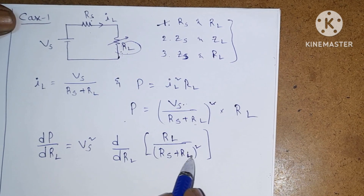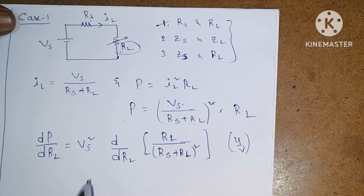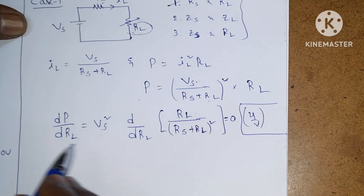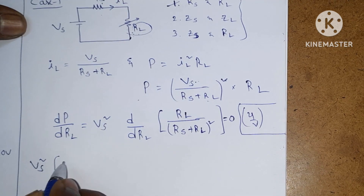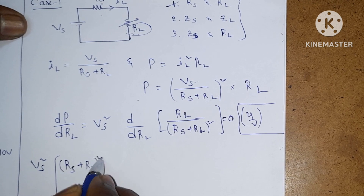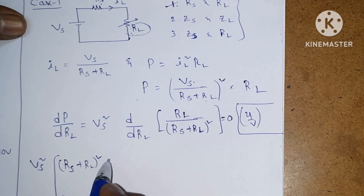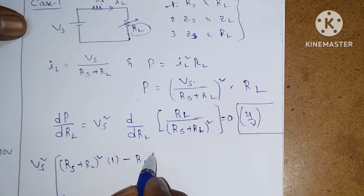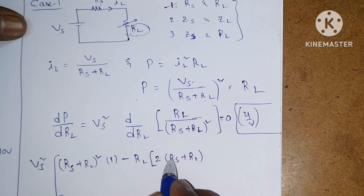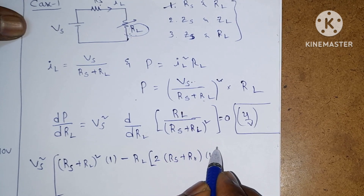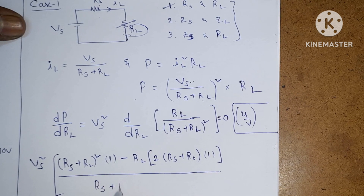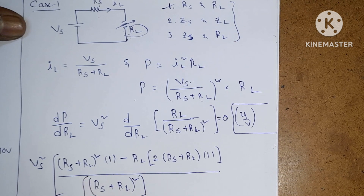Since both numerator and denominator are functions of the variable, we apply the U/V rule. Applying the quotient rule and equating to zero: Vs² times [(Rs + Rl)² × 1 − Rl × 2(Rs + Rl) × 1] divided by (Rs + Rl)⁴ equals zero. Differentiating Rl with respect to Rl gives 1, and the derivative of (Rs + Rl) with respect to Rl is 1 (since Rs is constant).